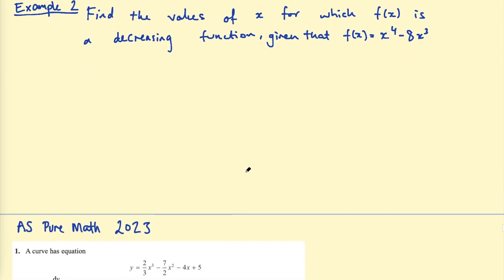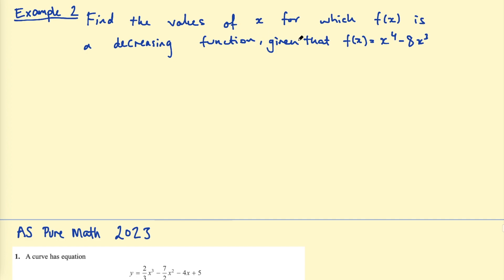Example 2: find the values of x for which f(x) is a decreasing function, given that f(x) = x⁴ − 8x³. Again, we want the derivative first. Using the power rule on each term: multiply the coefficient by 4 for the first term, giving 4x³. For the second term, 8 × 3 = 24, and subtracting 1 from the power gives x², so that term is −24x². So f'(x) = 4x³ − 24x².